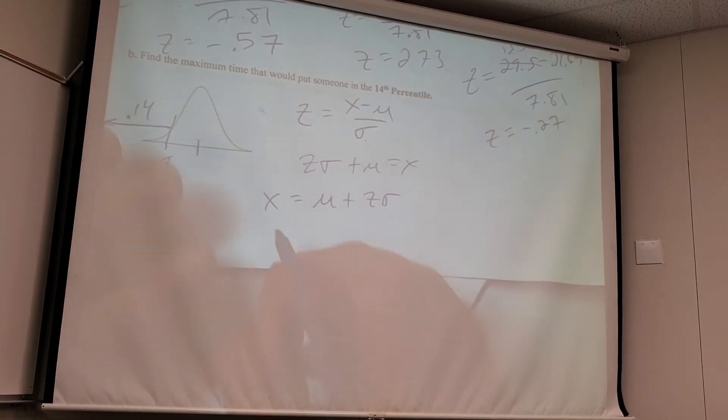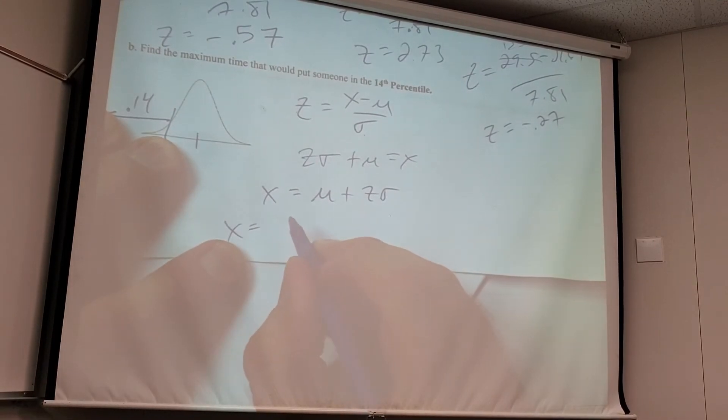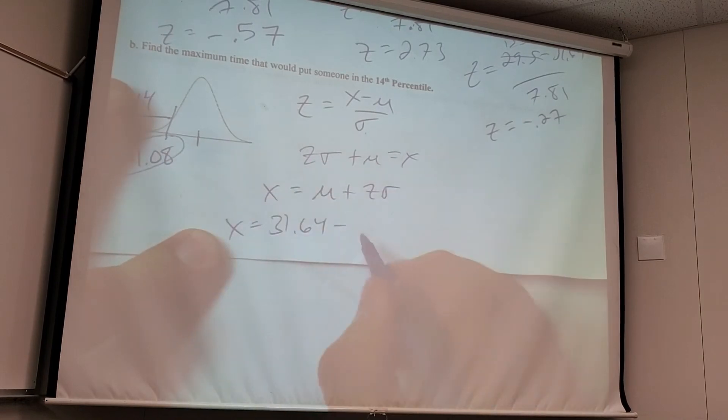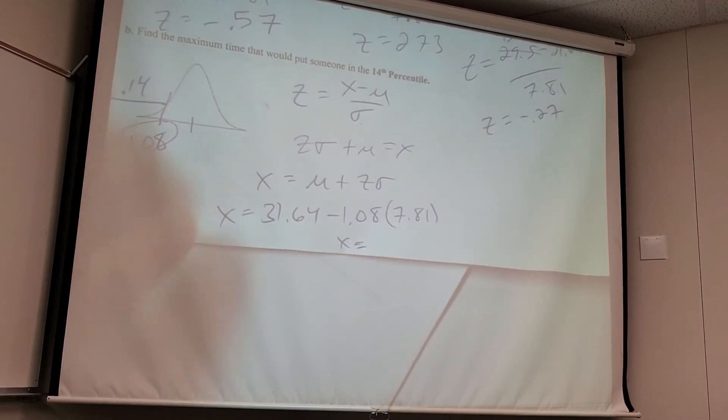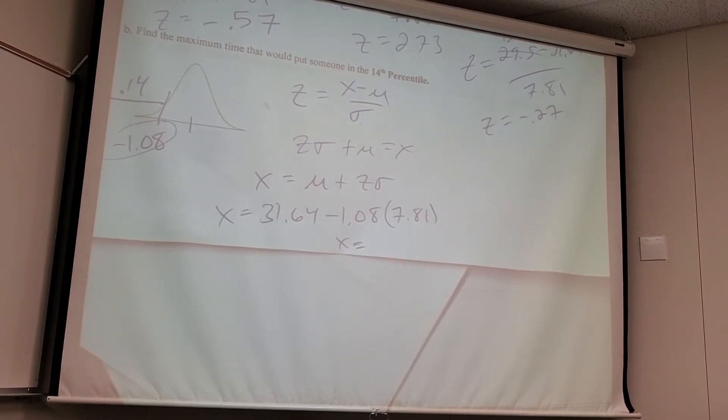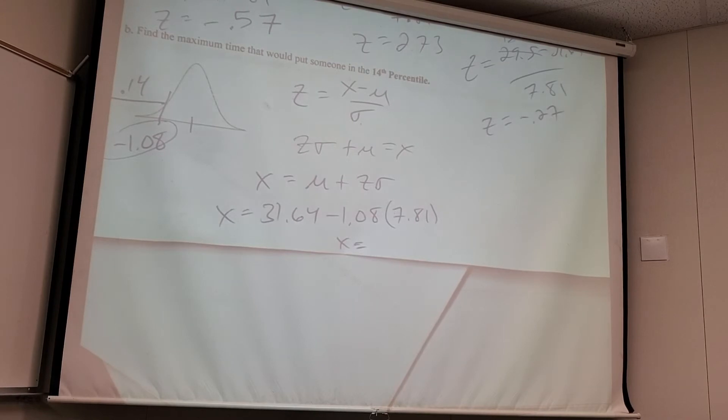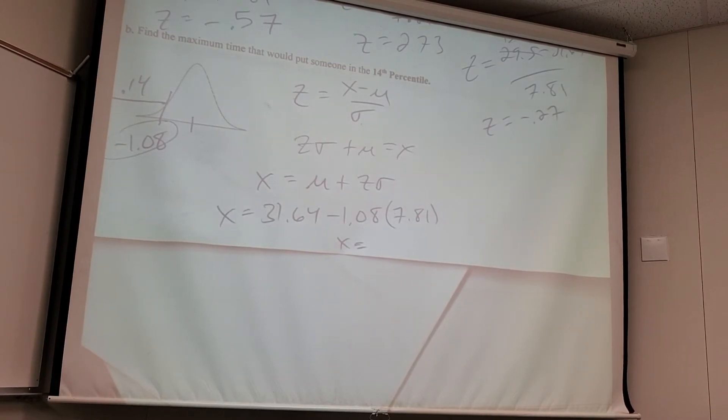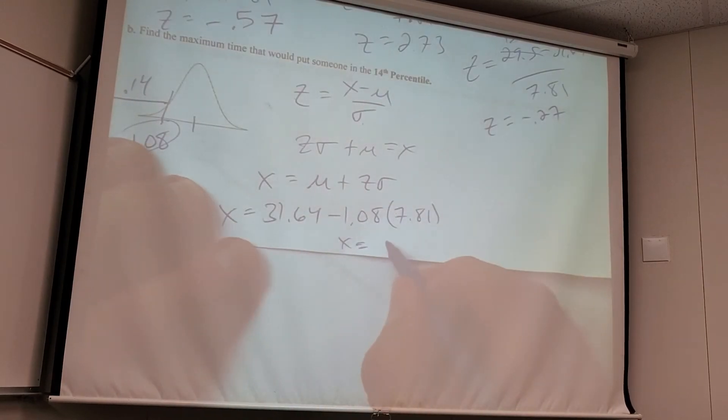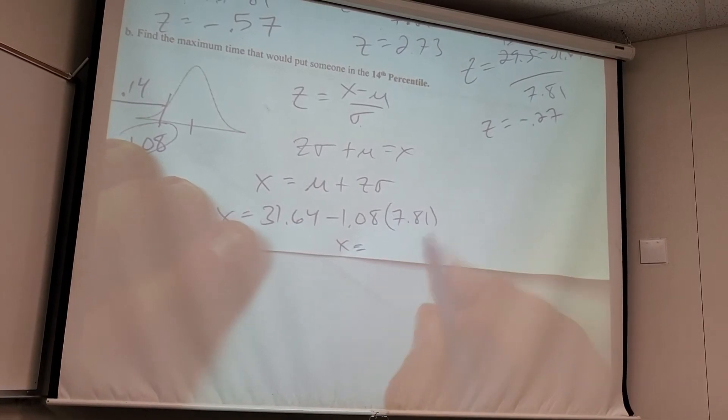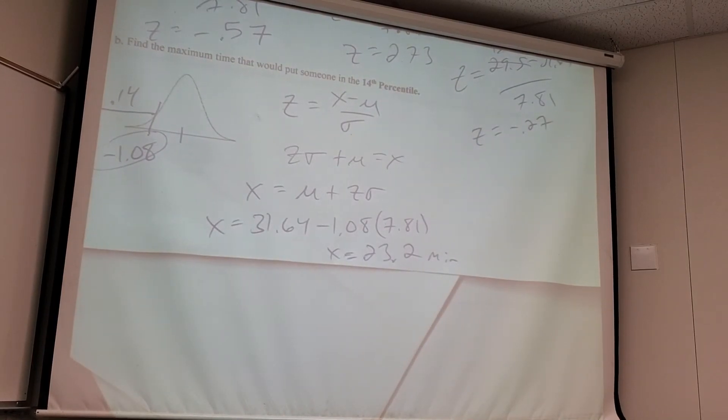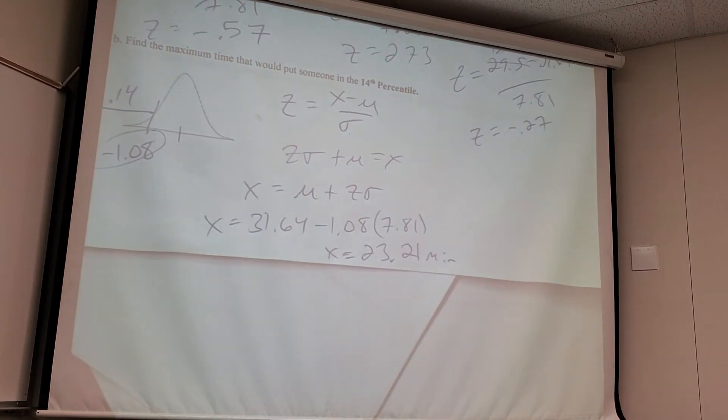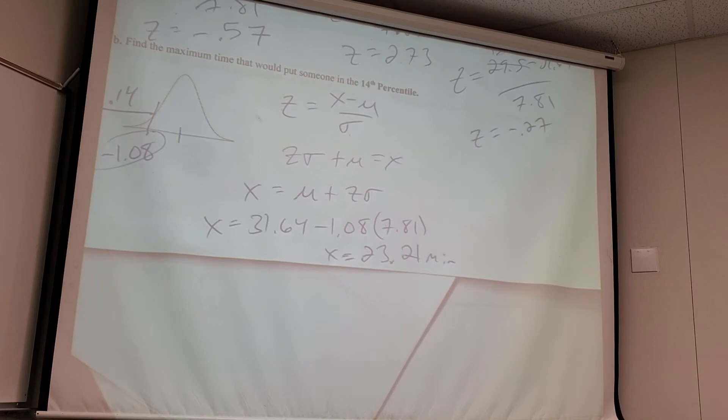So now if I just plug stuff in. x equals 31.64 minus 1.08 times 7.81. Would you say the 14th percentile is a good place to be? For this problem? Yes. Because you want less time spent looking for a parking spot. What do you guys get when you do this? 23.2? So if it took somebody that much time, they are in the 14th percentile. 14% of people took less. That's pretty good.